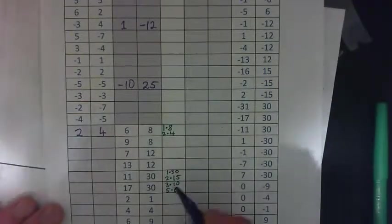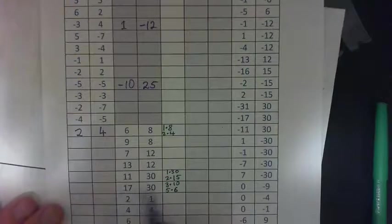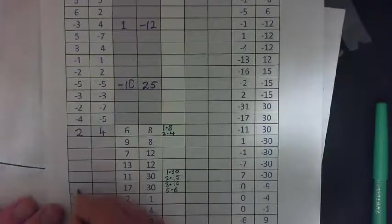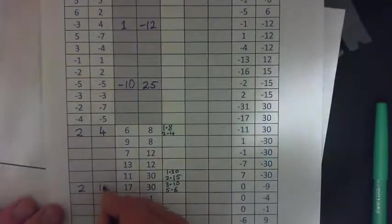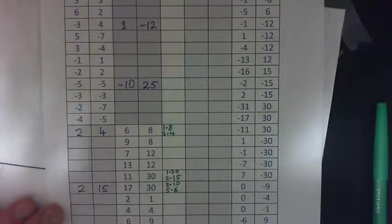Out of those, can we get two numbers that add to 17 but multiply to 30? What about 2 and 15? If you add them, you get 17. If you multiply them, you get 30. So that's how you do this.